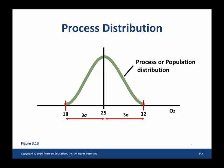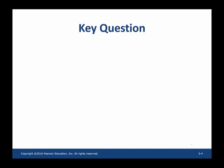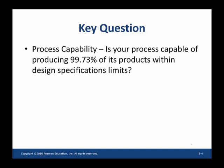So why do I pick three standard deviations? Because that is the standard practice used when process capability is measured. In other words, the capability question becomes: is your process capable of producing 99.73% of its products within the design specification limits?